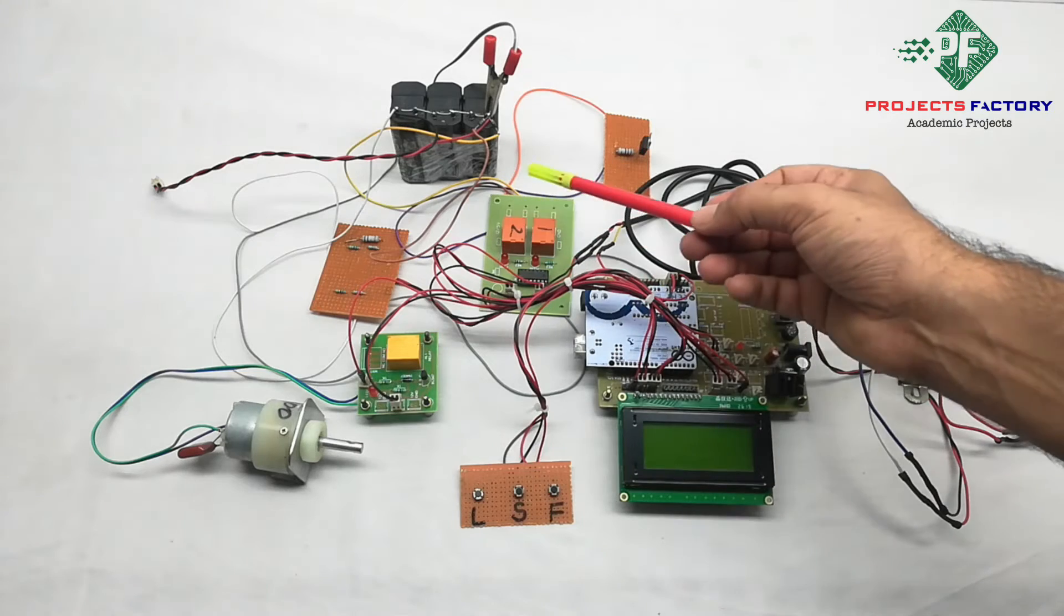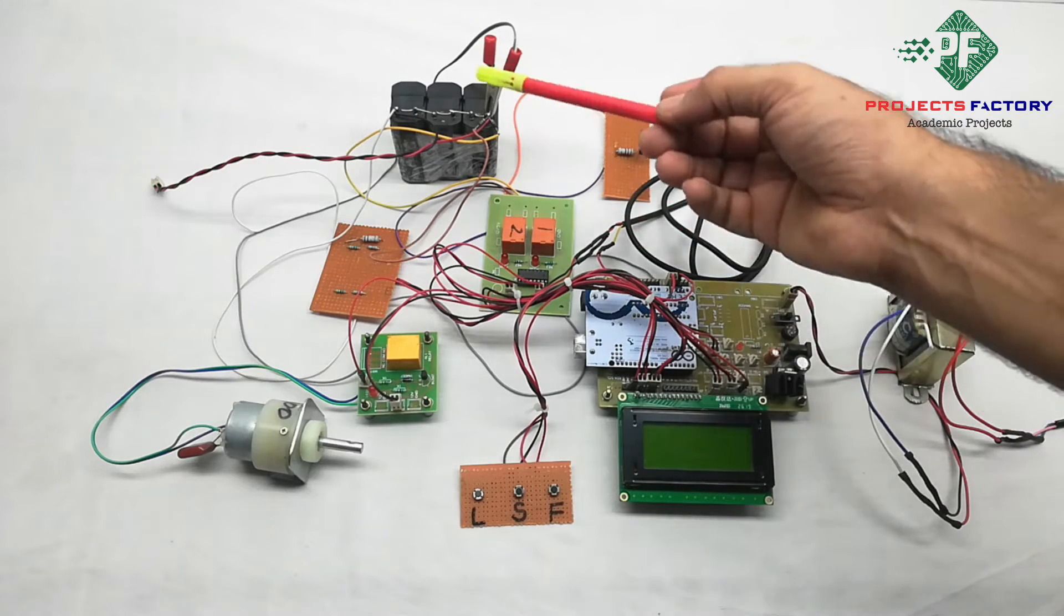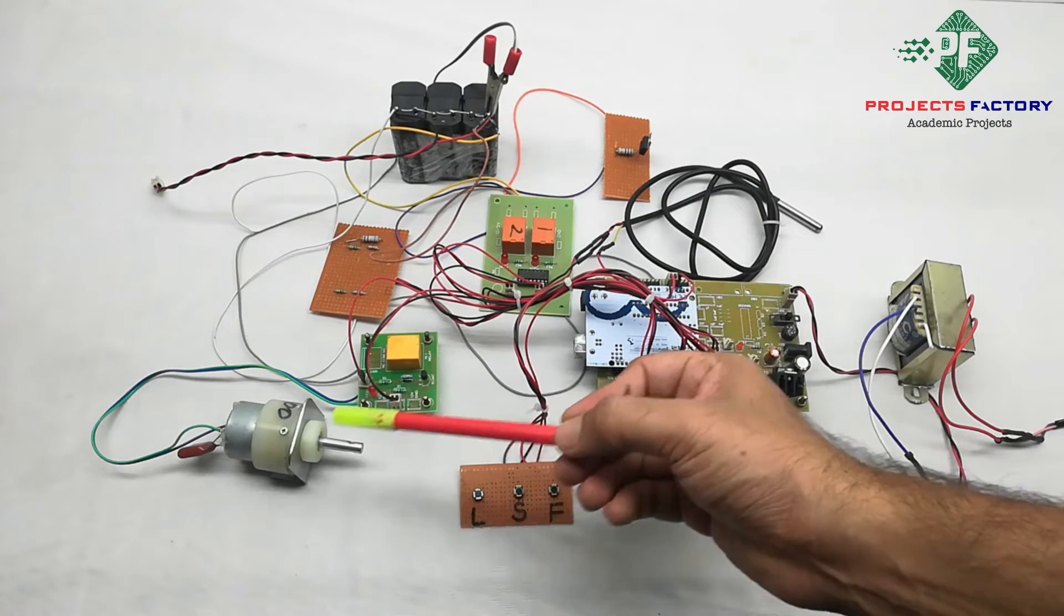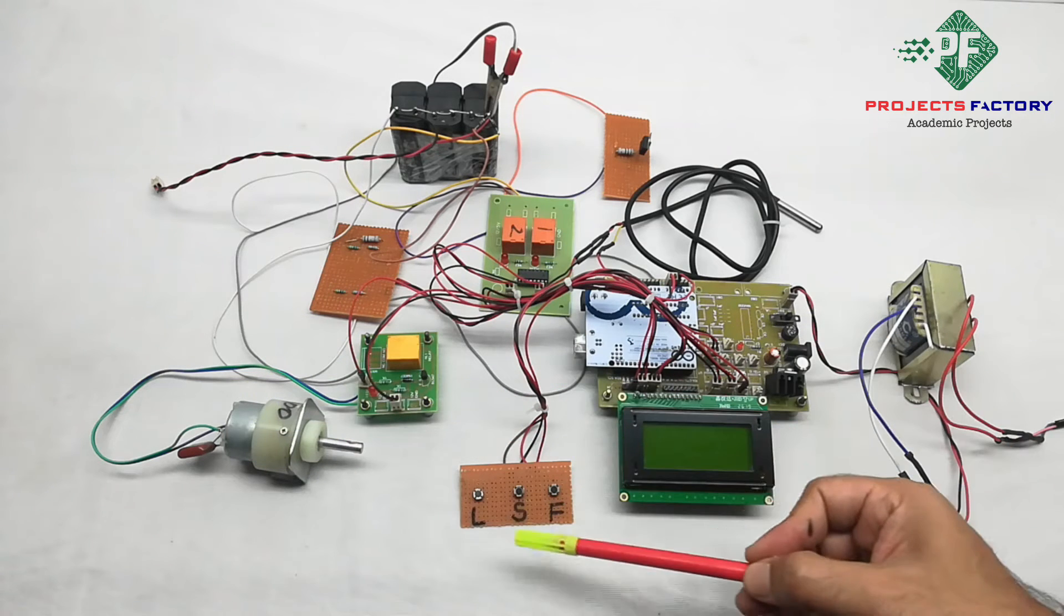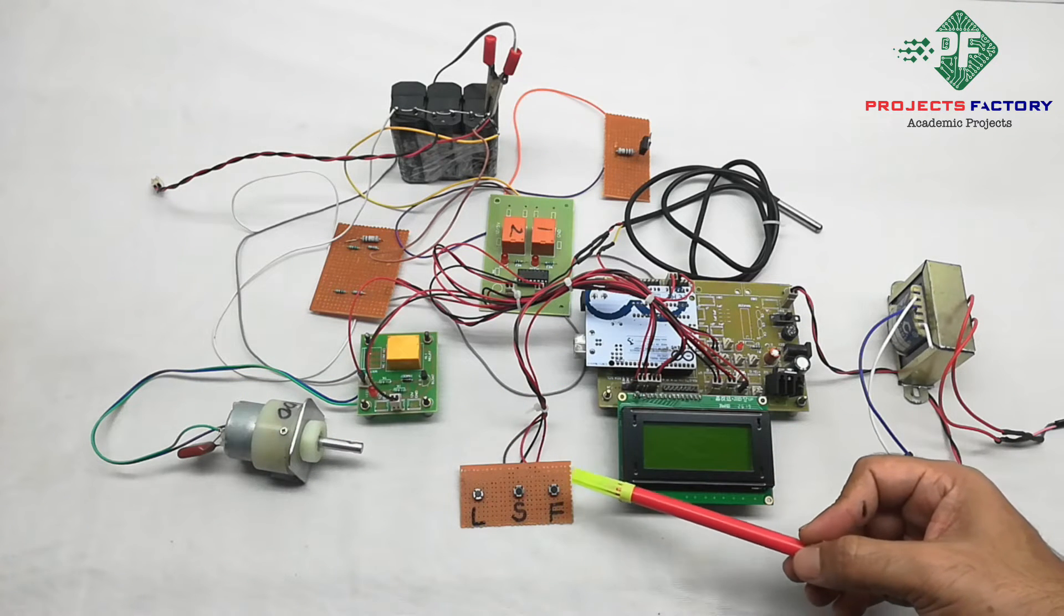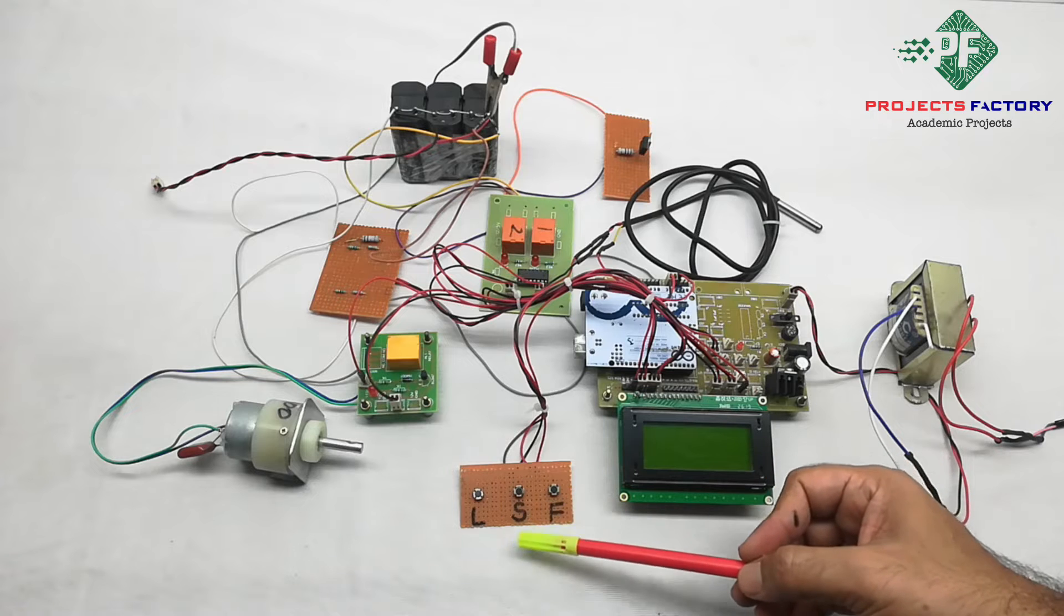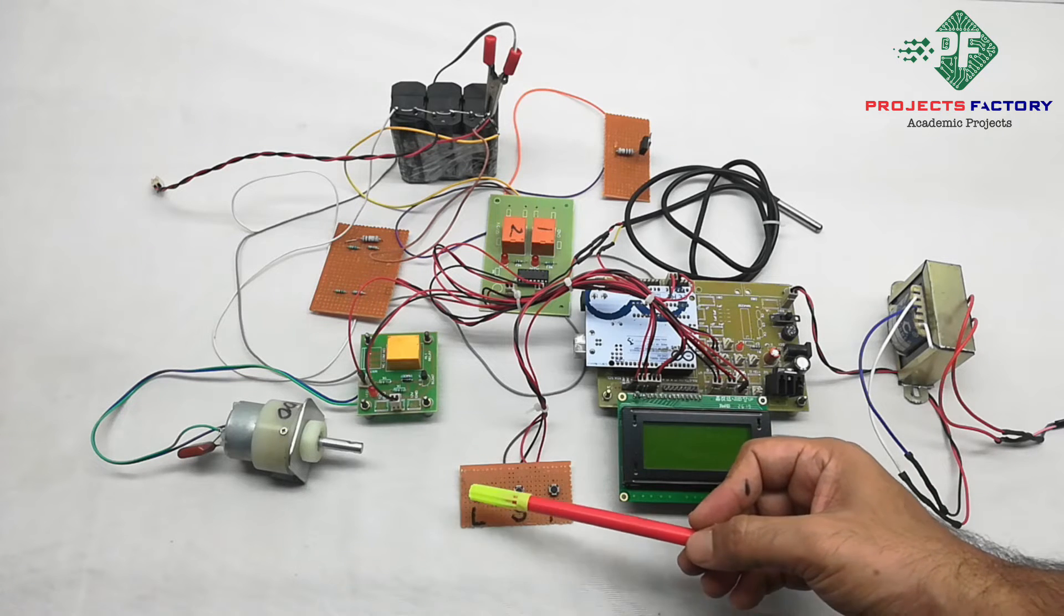These two relays for fast and slow charging the battery, this relay for load on and off. Here we take load as a DC motor. There are three buttons: F for fast charging, S for slow charging, L for load on and off.